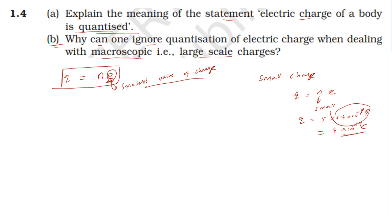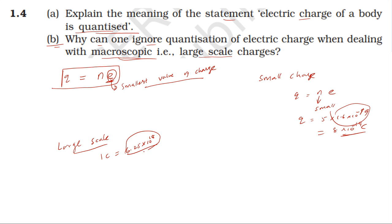For a large macroscopic charge, take the example of 1 coulomb. One coulomb corresponds to approximately 6.25 into 10 to the power 18 electrons. So a macroscopic charge involves an enormous number of individual electron charges.